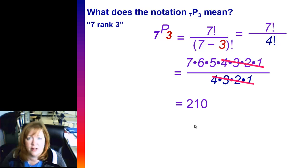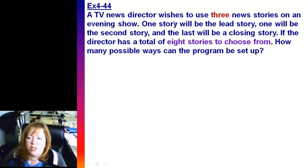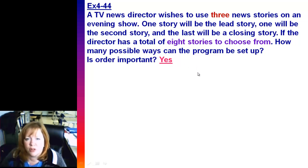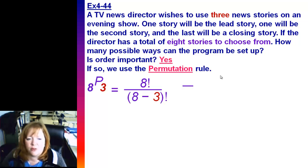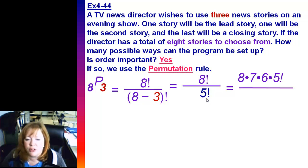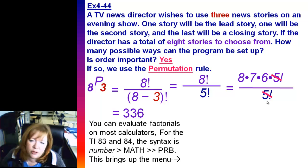A news director wants to use three news stories on an evening show. One's the lead story, one's the second story, and one's the closing story. She has eight stories from which to choose. How many possible ways can she set up the program? You always ask yourself, is order important? That'll come into play later when we talk about combinations. But in this case, order is important because the lead story is the most important story. So we're going to be using a permutation, the permutation rule. And we have eight stories to choose from, and we're ranking three. So I say eight rank three, given eight rank three, and I put that into permutations formula. So I'd have eight factorial over five factorial. I could rewrite this as eight times seven times six times five factorial, because five factorial is five, four, three, two, one, over five factorial, and those cancel out. That's 336. On your calculator, it will evaluate these factorials for you, but they're kind of fun to do by hand.